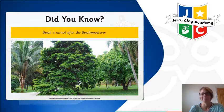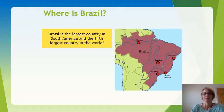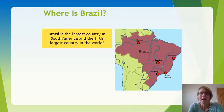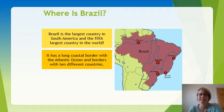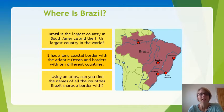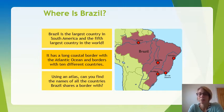When looking for Brazil on the map, you'd find it in South America. It is the fifth largest country in the world, with a long coastal border with the Atlantic Ocean and borders with 10 different countries. One challenge you could take up today is to use an atlas and find out the names of all the countries that Brazil shares a border with.